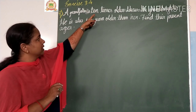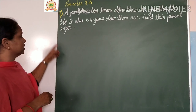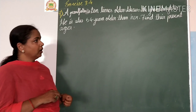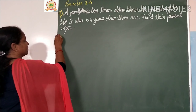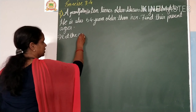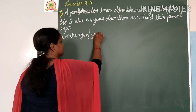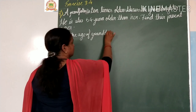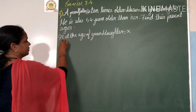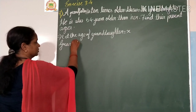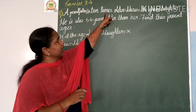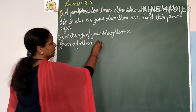Problem 9: A grandfather is 10 times older than his granddaughter. He is also 54 years older than her. Find their present ages. Let the age of granddaughter be equal to x. Grandfather is 10 times older than the granddaughter, so grandfather's age equals 10x.